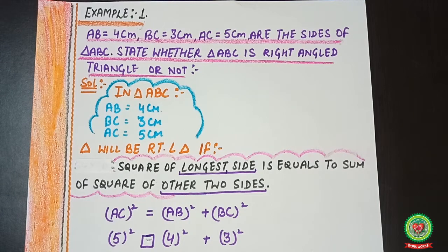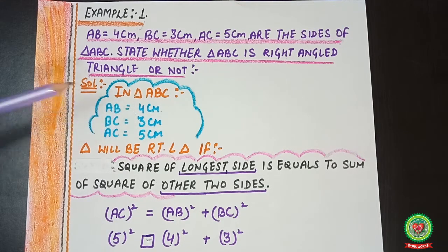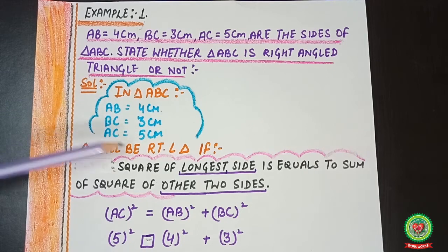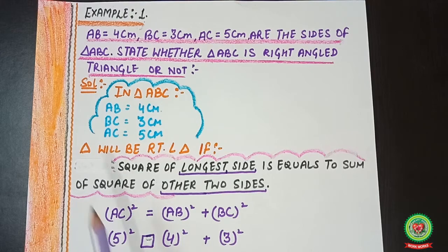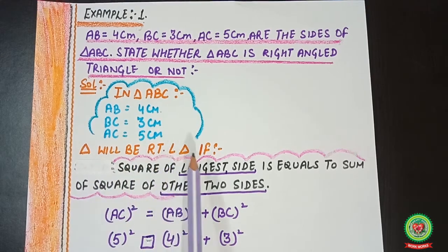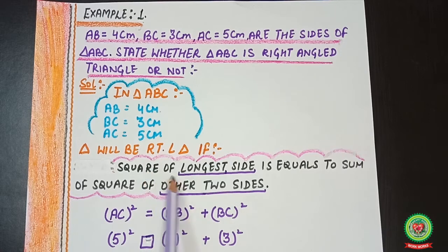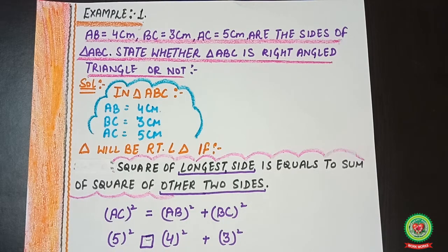Let's start. In triangle ABC, AB = 4 cm, BC = 3 cm, and AC = 5 cm. We apply the property of the Pythagoras theorem: the triangle will be a right angle triangle if the square of the longest side equals the sum of the squares of the other two sides.